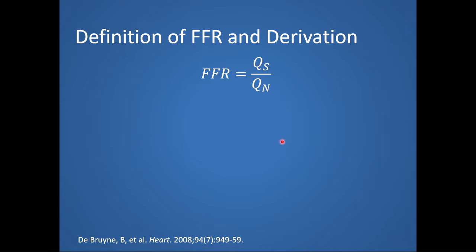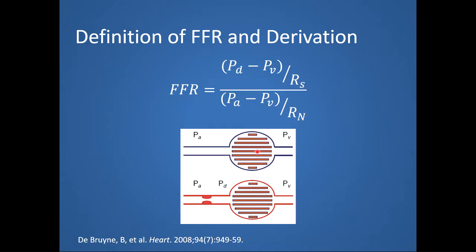Let's define FFR in more detail and discuss how it is derived. Thus far I've discussed FFR as a ratio of two coronary flows, but those familiar with FFR remember that in the cath lab we think of it as a ratio of two pressures. Using Ohm's Law — where coronary flow equals the change in pressure divided by resistance — we find that FFR equals the distal pressure minus coronary venous pressure divided by resistance across the stenosis. This can also be expressed as aortic pressure minus coronary venous pressure divided by the resistance if there was no stenosis. In the setting of hyperemia, resistances become minimal and constant, so they cancel out.